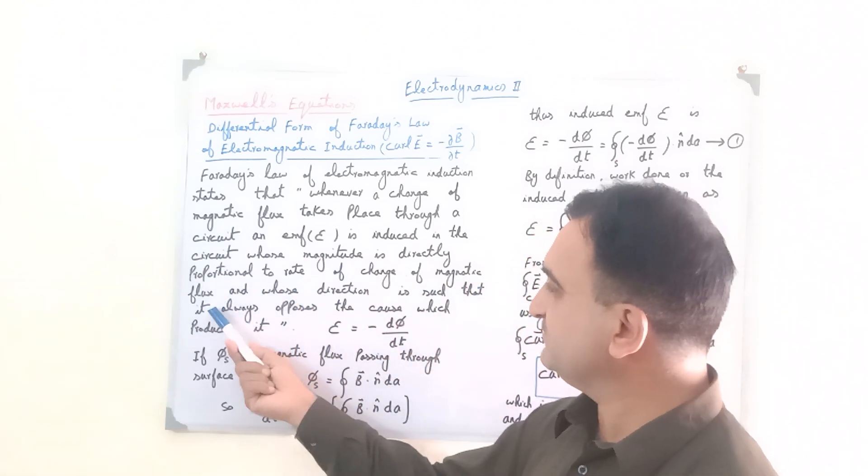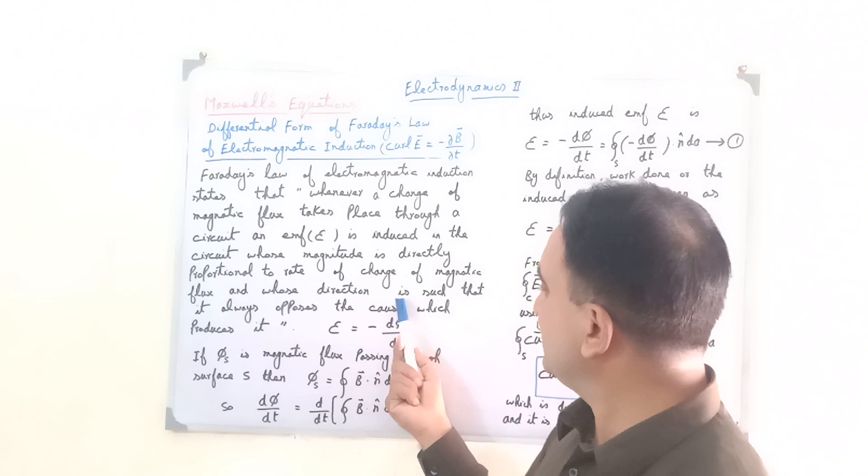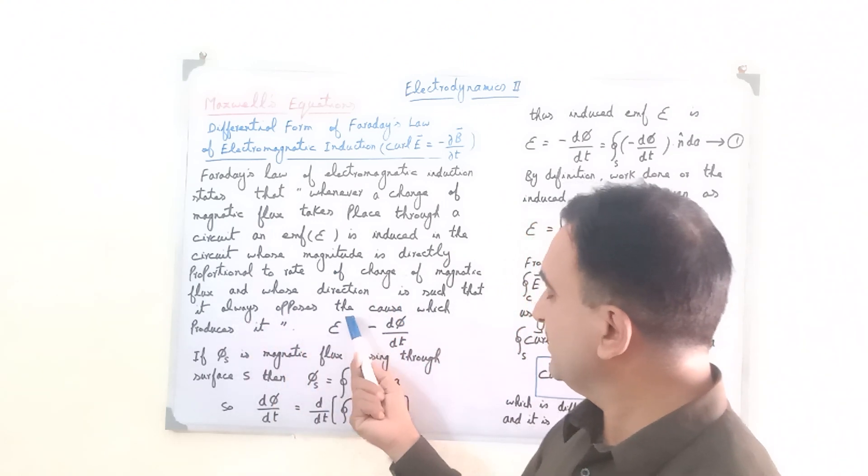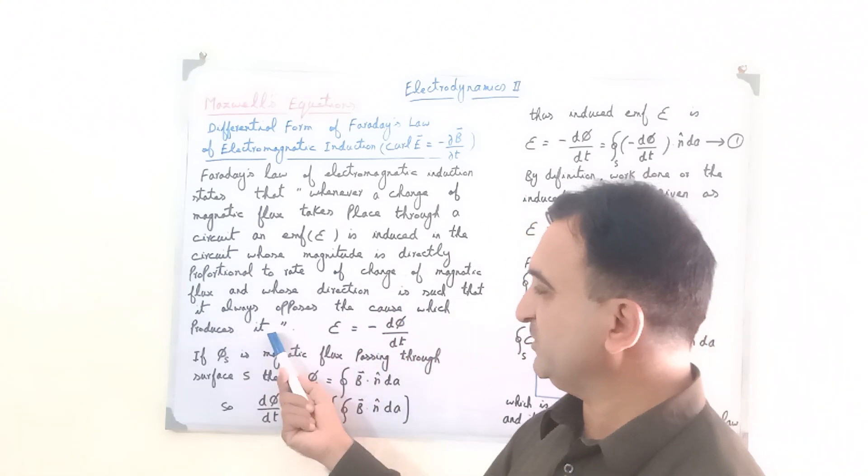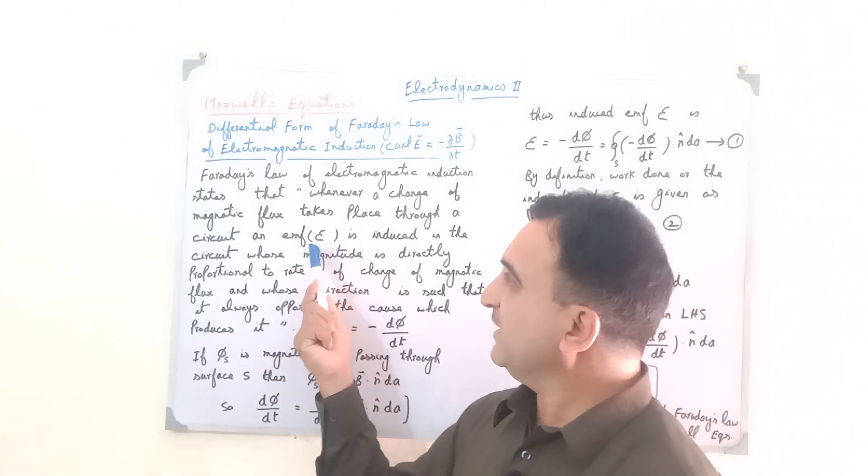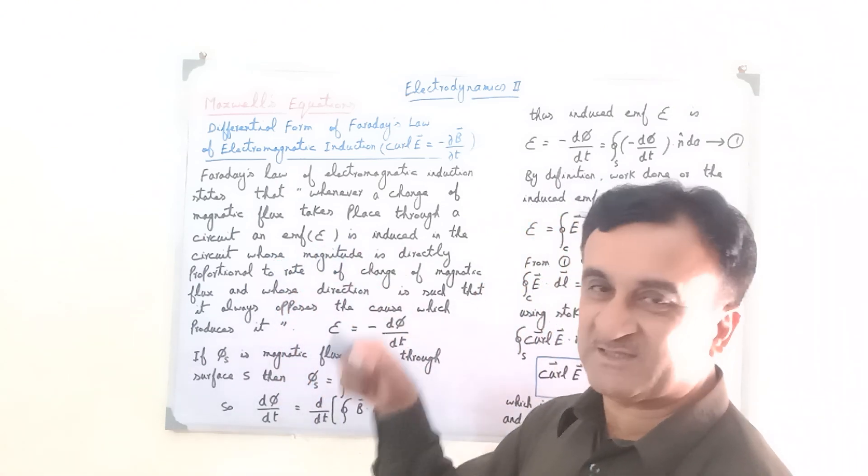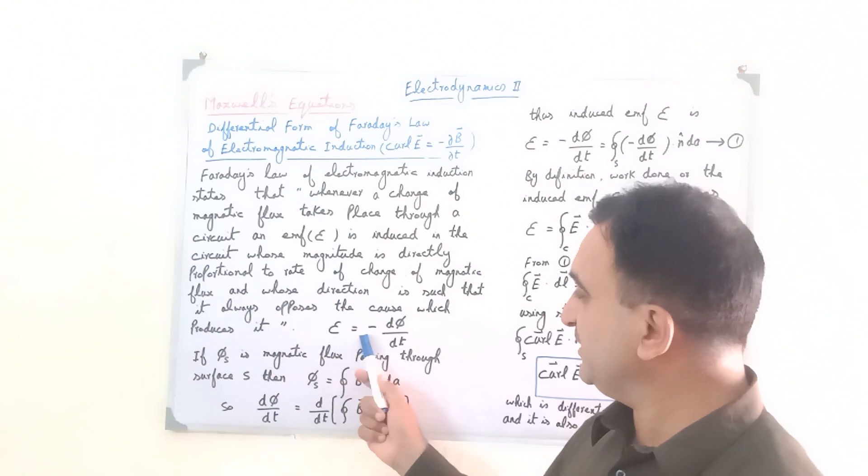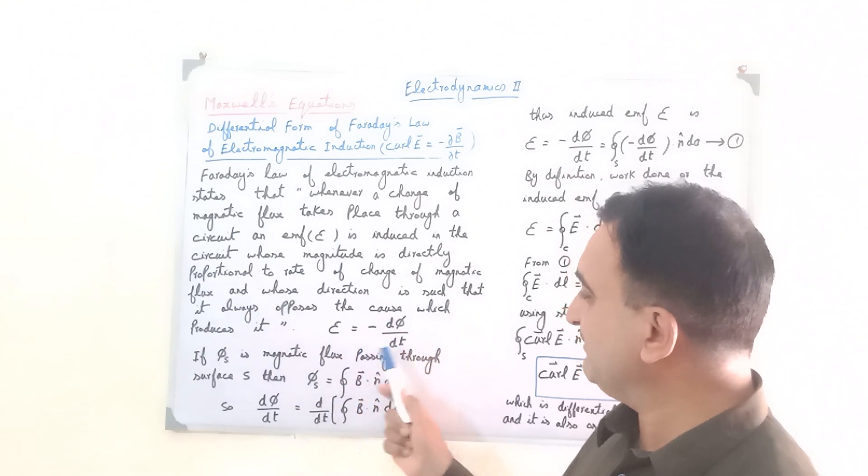And whose direction is such that it always opposes the cause which produces it. We can write Faraday's law in mathematical form: E is equal to minus d phi by dt.